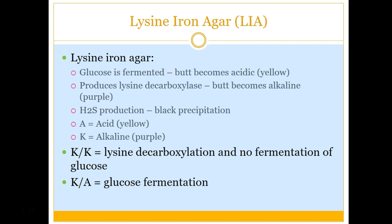The LIA agar stands for lysine iron agar. When you inoculate it, if the butt of the agar tube becomes yellow, glucose was fermented. If the bottom becomes purple (alkaline), it produces lysine decarboxylase. They write results with the first letter for the top and the bottom letter for the butt. K over K means purple over purple — the whole tube was purple, indicating lysine decarboxylase present but no glucose fermentation. K over A means glucose was fermented at the bottom. If there's black precipitate in the tube, it also produces H2S — hydrogen sulfide.